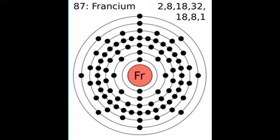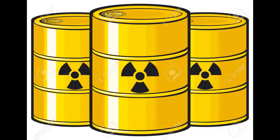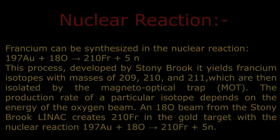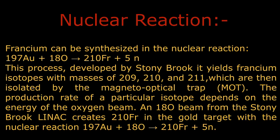This creates francium atoms. The isotope created is francium-212 and it is stored in highly specific bottles or test tubes. One more way to create francium is nuclear reaction. Francium can be synthesized in the nuclear reaction: 197Au + 18O → 210Fr + 5 neutrons.